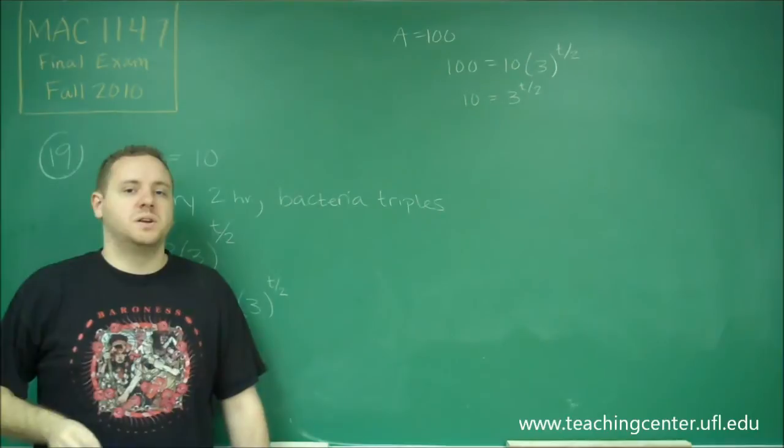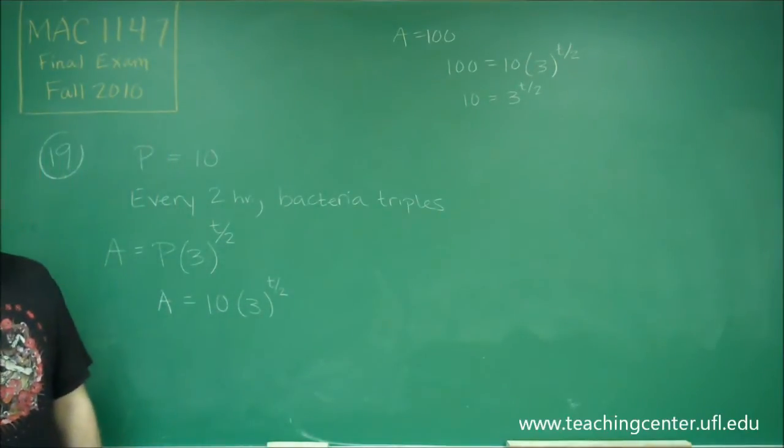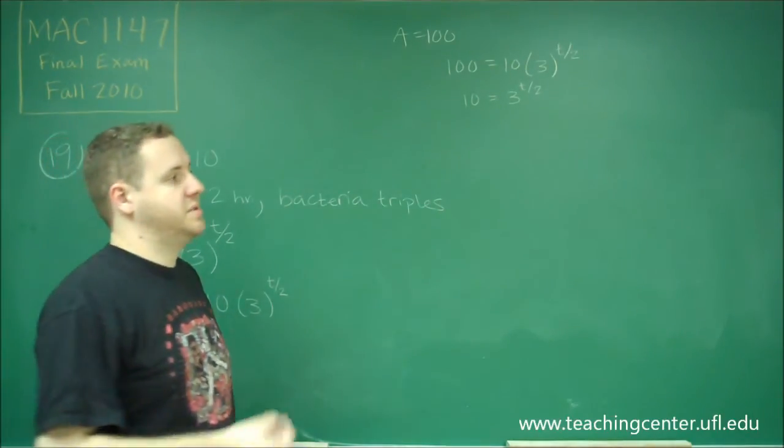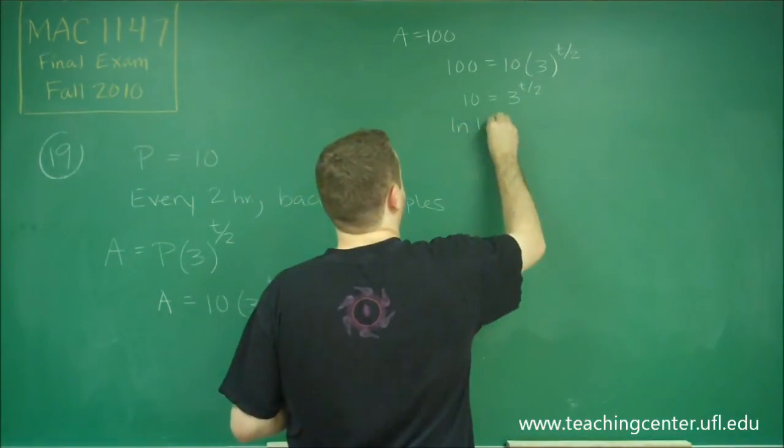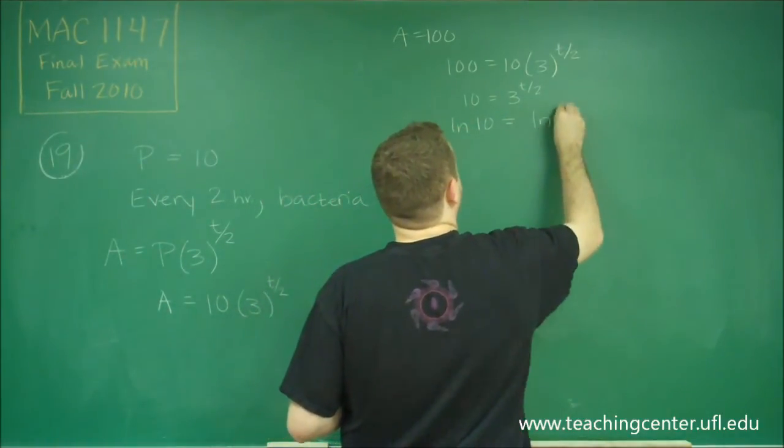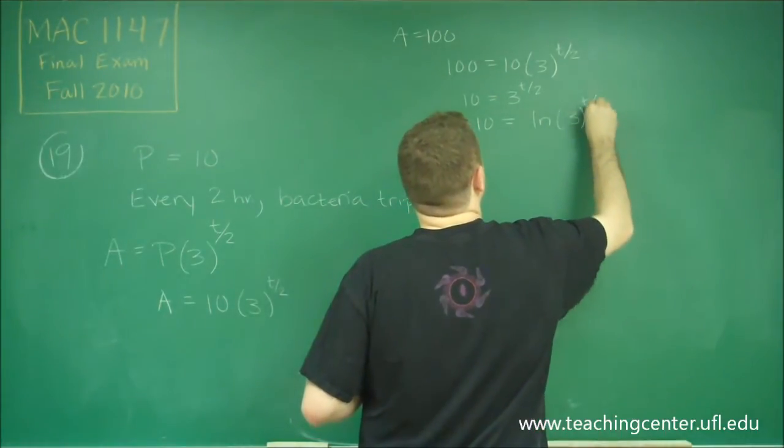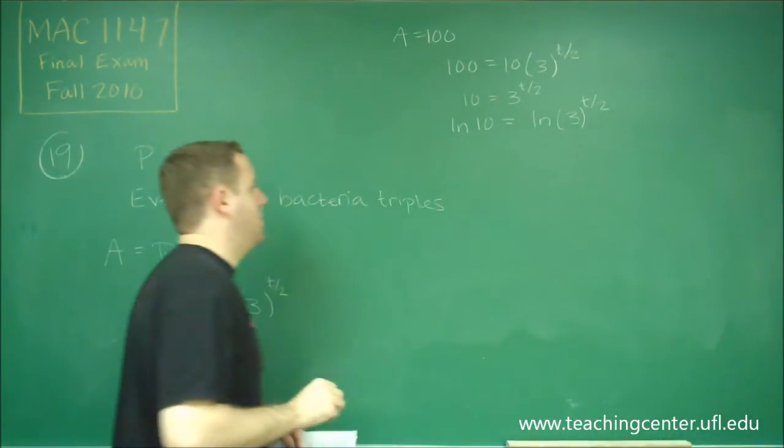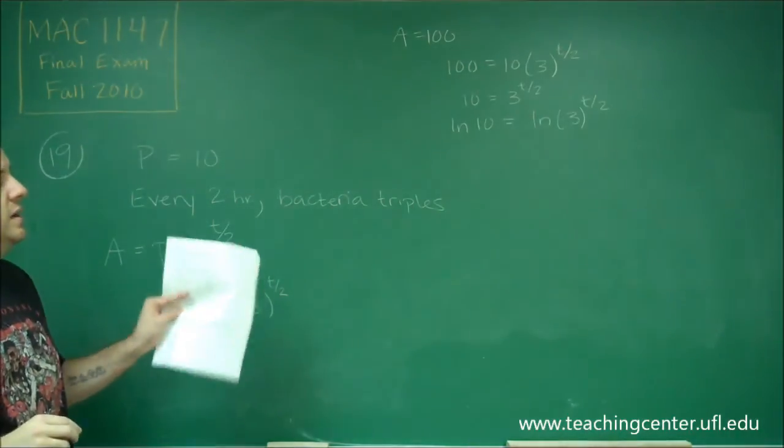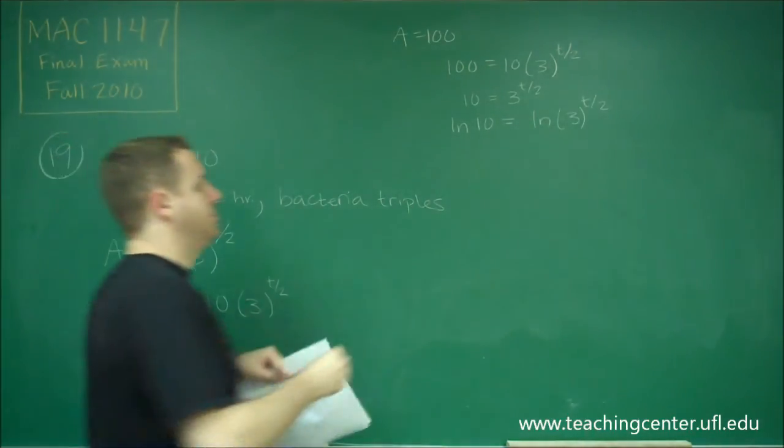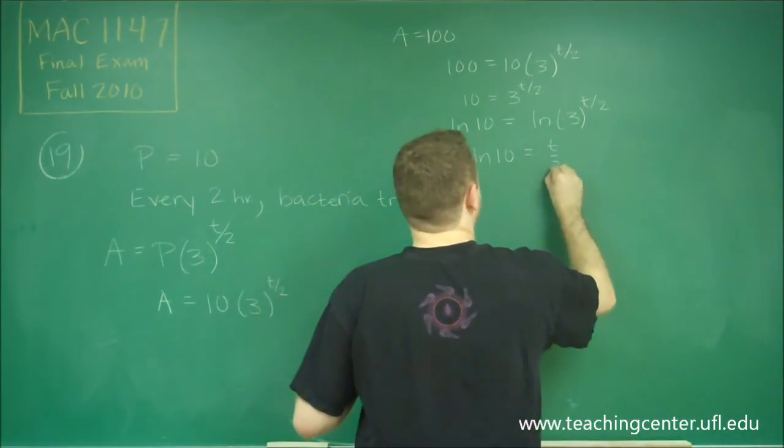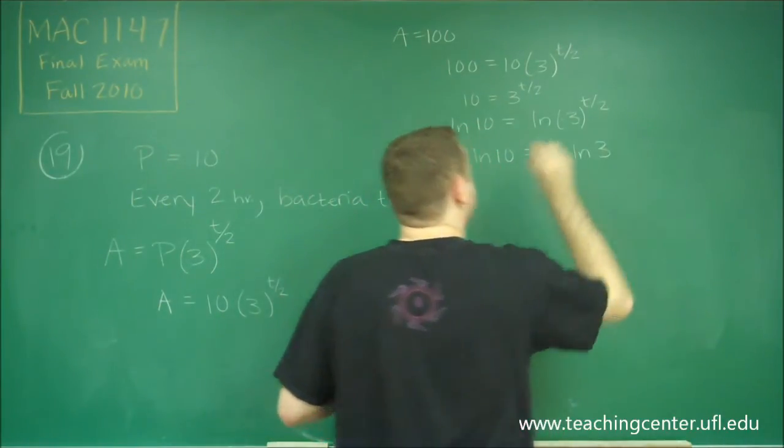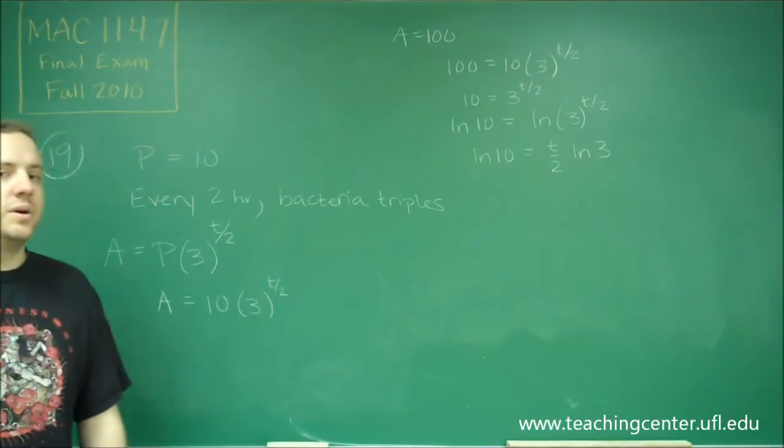Now since the variable that we're trying to solve for is in the exponent, to solve for that we need to take the natural log on both sides to get the exponents down. So we have ln of ten is equal to ln of three to the t over two. And remember that any time you have a power, or ln of something to a power, that power can come in front. So we have ln of ten equals t over two times ln of three, by bringing the power in front of the ln.